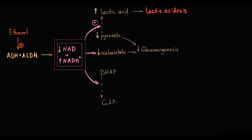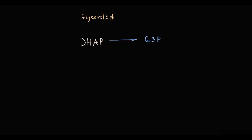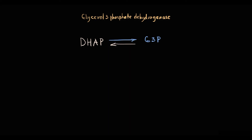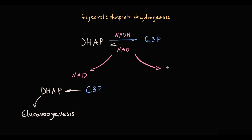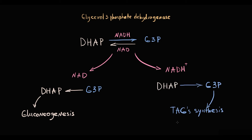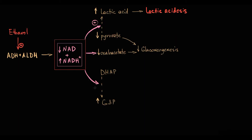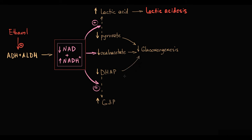High NADH/NAD+ ratio also increases glycerol-3-phosphate. The reaction between dihydroxyacetone phosphate (DHAP) and glycerol-3-phosphate is catalyzed by glycerol-3-phosphate dehydrogenase and is bidirectional; the direction is determined by the NADH/NAD+ ratio. If NAD+ prevails, DHAP is formed, which can be used in glycolysis or gluconeogenesis. In the case of alcohol consumption, high NADH stimulates formation of glycerol-3-phosphate and decreases DHAP, depleting another gluconeogenic substrate. Together, these mechanisms cause severe fasting hypoglycemia.